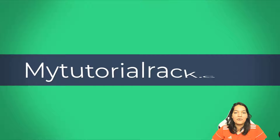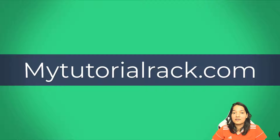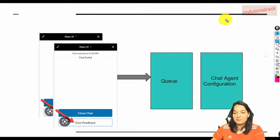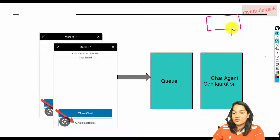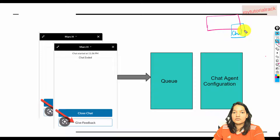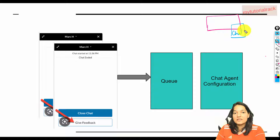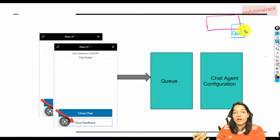Hello, this is Deepika from MyTutorialRack.com. In this tutorial, we are going to configure chat on our site. We're going to have a chat pop-up enabled at the bottom right-hand side, and through this chat pop-up, customers will be able to communicate with the call center agent. If you are familiar with service console, you know how to enable chat, but if you are not, don't worry — I'm going to show you step by step how to enable chat on our site.